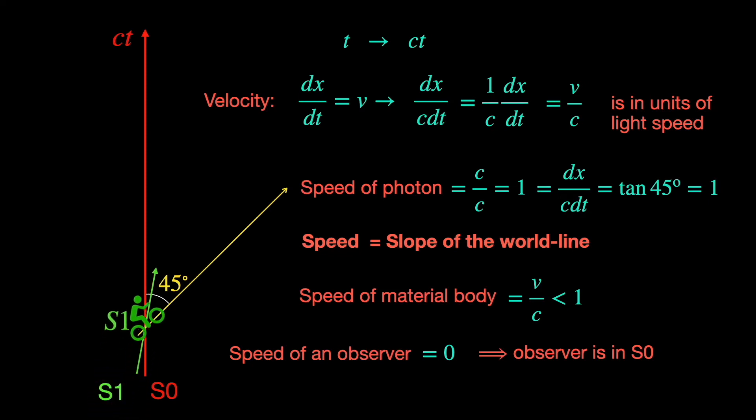In the same spirit, the time axis of the moving frame S1 is nothing but the world line of one of the S1 frame observers. If he has a uniform relative velocity v/c with respect to S0, then the time axis of S1 makes an angle tan⁻¹(v/c) with the time axis of S0.